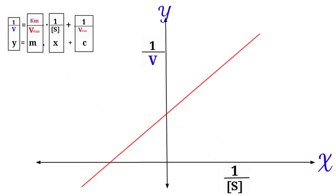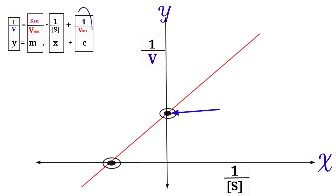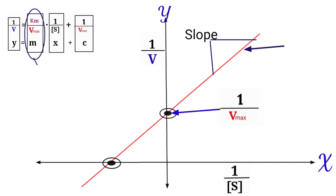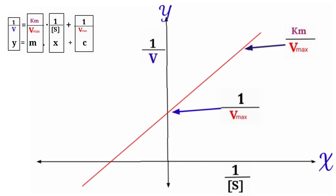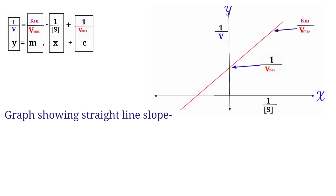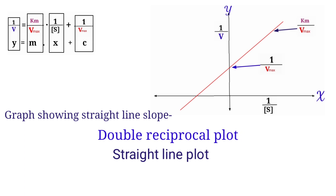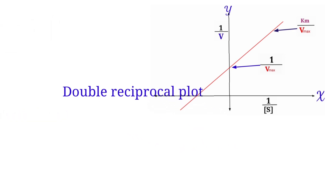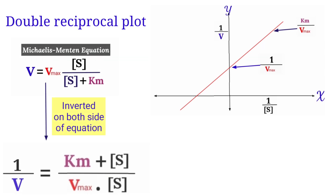When you draw a straight line on this plot, you find two interception points: one on the y-axis and one on the x-axis. The y-axis intercept is 1/Vmax, and the slope of the straight line represents Km/Vmax. This plot shows four key entities from the Lineweaver-Burk equation and is also known as a double reciprocal plot. It is called double reciprocal because the Michaelis-Menten equation is inverted on both sides.